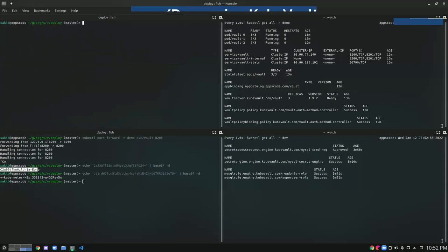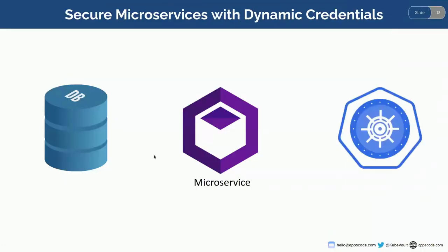Let's exit from the DB right now. In this way a user can be granted some permission — for this particular user we have given them the super user role, so they can read, write, or drop any databases. Now one interesting question comes: how do we secure microservices with dynamic credentials, which is one of the very popular use cases of Vault?